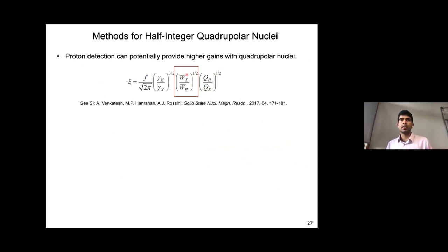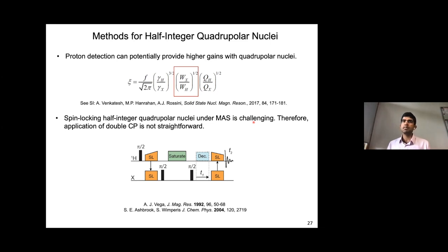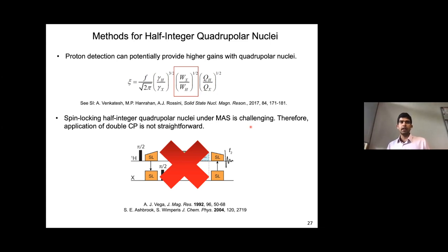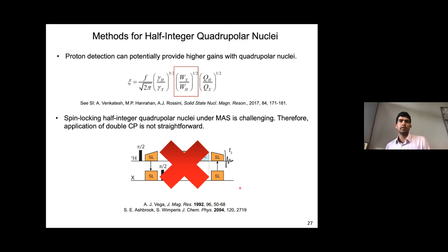Going back to the sensitivity enhancement equation, when you have very broad spectra for half-integer quadrupolar nuclei, proton detection becomes favorable — the broad quadrupolar line widths are now in the numerator, while proton line widths are significantly narrower. Double CP or CP in general works very poorly with half-integer quadrupolar nuclei, especially for higher CQ sites, because spin locking under MAS is very challenging for these types of nuclei.